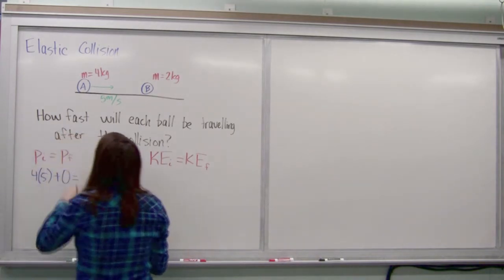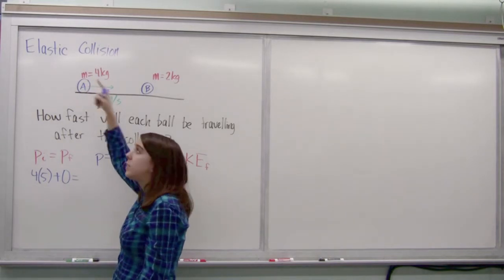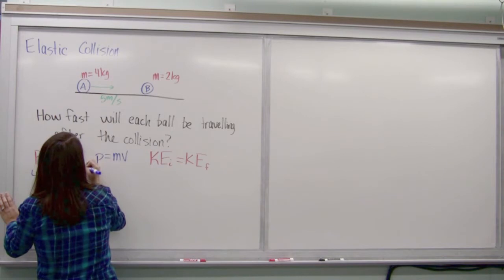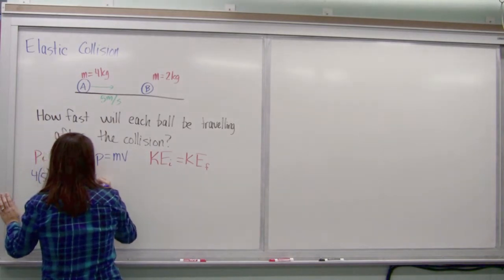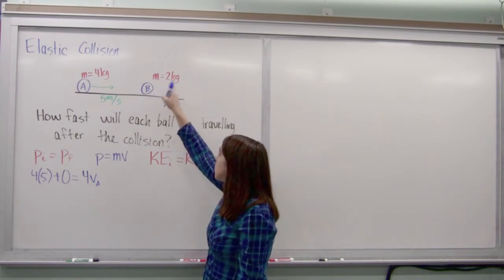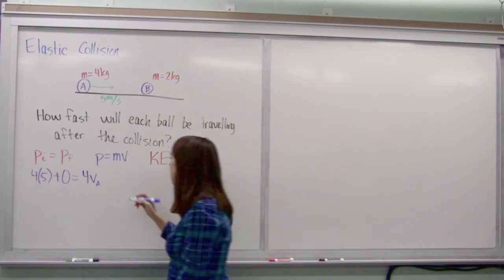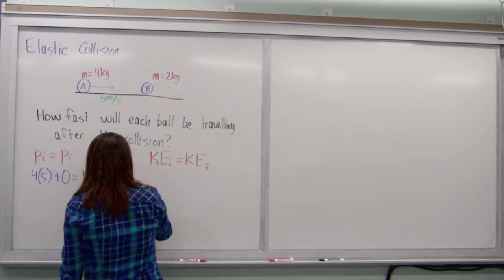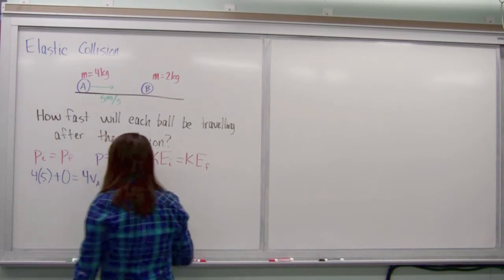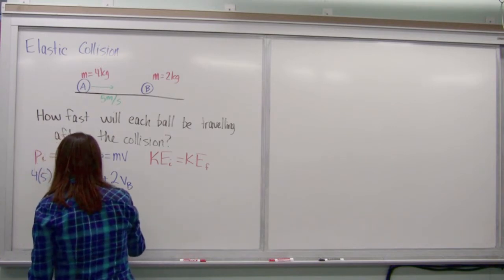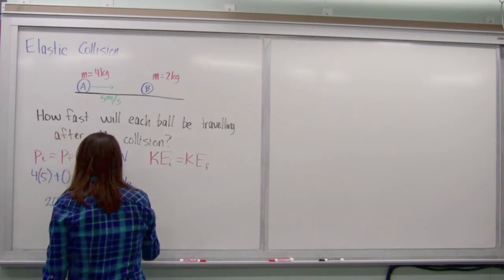The final velocity will be the mass of this one times whatever velocity of that one we have. So I'll go 4 times VA and it'll be the mass of this one times whatever velocity that one has. So I'll go 2 times VB. That gives me 20 is equal to 4 VA plus 2 VB.